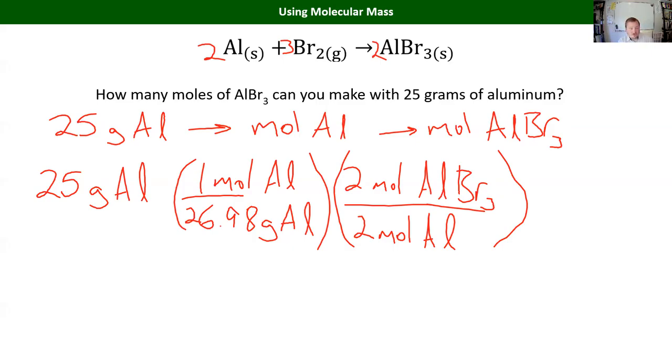So, this should look pretty similar. We just added one step on to the beginning of, if I give you a mass of a compound or an element to start with, before we can do the stoichiometry step of converting moles of one compound to moles of another from the balanced reaction, before we can do that, we need to be in moles. So, if I give you grams to start with, you got to use molecular weight, get to moles, and then you can go moles of aluminum to moles of product.